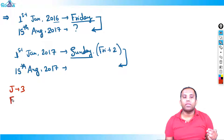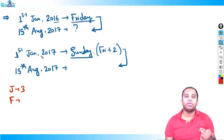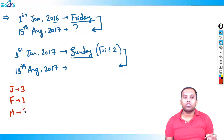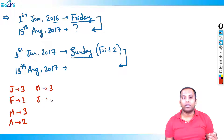We have to cross whole February — one odd day. March is a month of 31 days — three odd days. April is a month of 30 days — two odd days. We have to cross whole May, 31 days — three odd days. We have to cross whole June, 30 days — two odd days. We have to cross whole July, 31 days — three odd days.